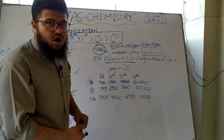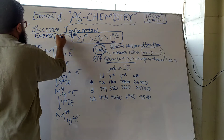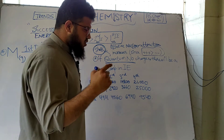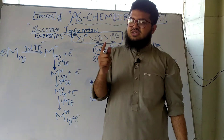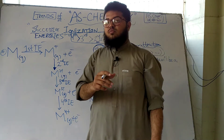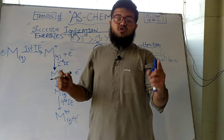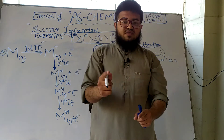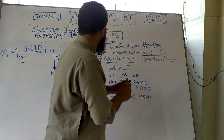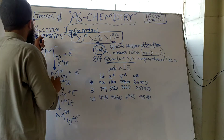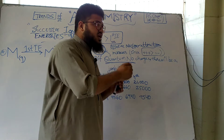First, a quick recap: what does the term successive ionization energy mean? You remember what the first ionization energy was — it is the energy needed to remove one mole of electrons from one mole of gaseous atoms to form one mole of gaseous, univalent, positively charged ions. Successive means the ionization energies that follow in chronological order, one after the other.